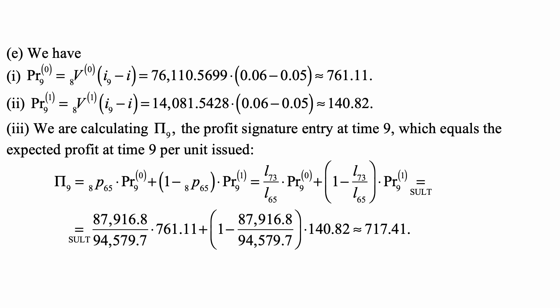And here's part E. The profit at policy duration 9 in state 0 is just the reserve at policy duration 8 multiplied by the excess of the earned rate over the assumed interest rate, because nothing else can produce profits at this point. That's just 1% of the reserve we calculated, so that's 761.11. And in state 1, again 1% of the reserve, so it's about 140.82.